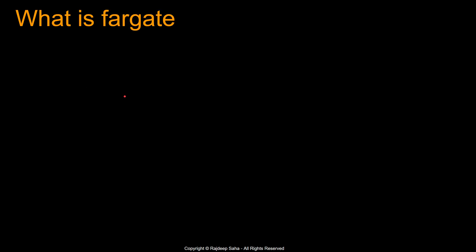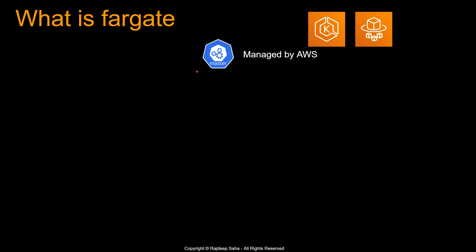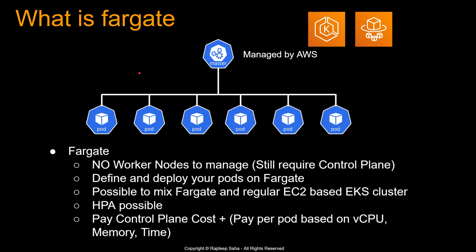This brings us to Fargate. Fargate was first announced with ECS and is now supported on EKS as well. With Fargate, you still have an EKS cluster and a master managed by AWS, but there are no nodes. Instead, you just deploy the pods.